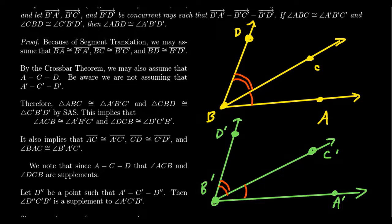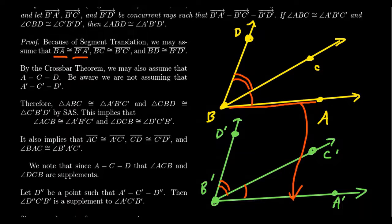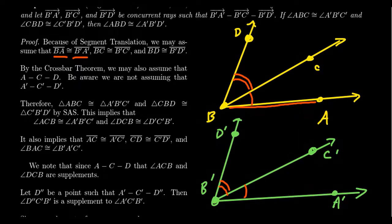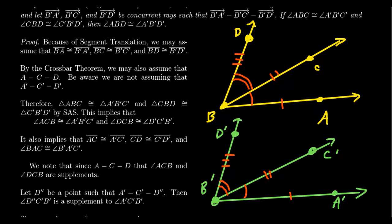The first thing we want to do — because we're going to use side-angle-side — is form triangles with congruent sides. Segment translation can help here. Without loss of generality, we can assume that segment BA is congruent to segment B'A'. Similarly, without loss of generality, we can also assume that segment BC is congruent to segment B'C', and that segment BD is congruent to segment B'D'. These all follow from segment translation.